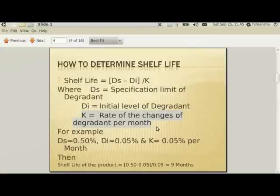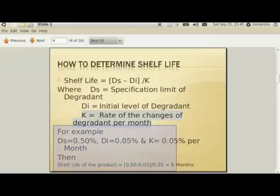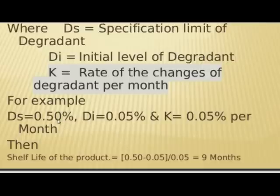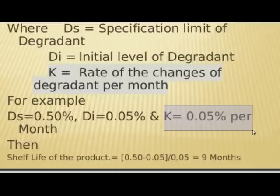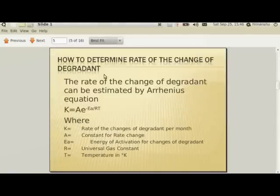This equation can help us calculate shelf life in most cases. Here I've given one example: if my specification limit for an impurity is 0.50%, my initial level of impurity was 0.05%, and the rate of change of impurity is 0.05% per month, then the shelf life is (0.50 − 0.05) ÷ 0.05 = 9 months. The question is: where do I get the rate of change of impurity — that is, the k value? Moving forward, we'll see how to get it.